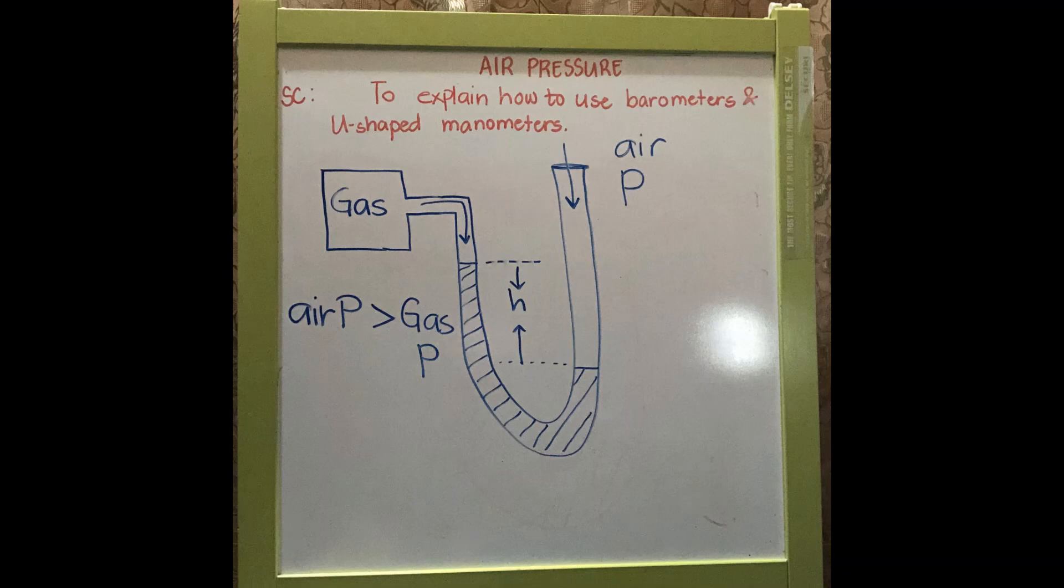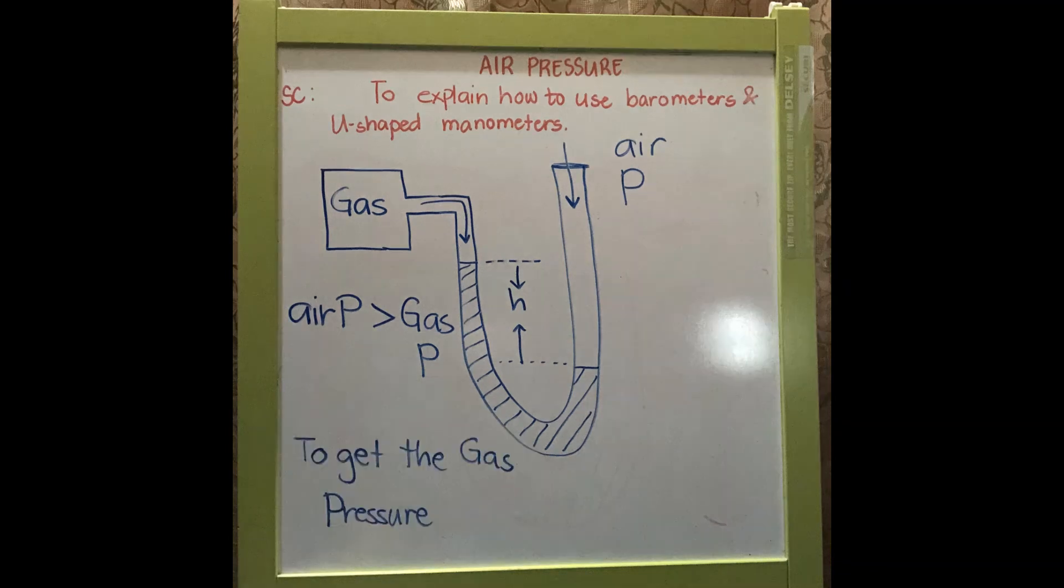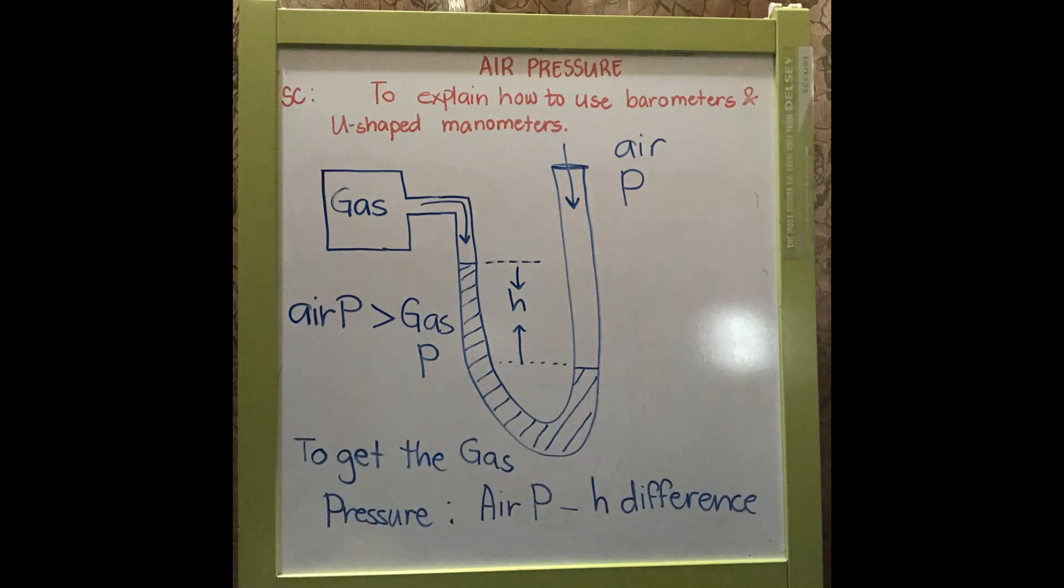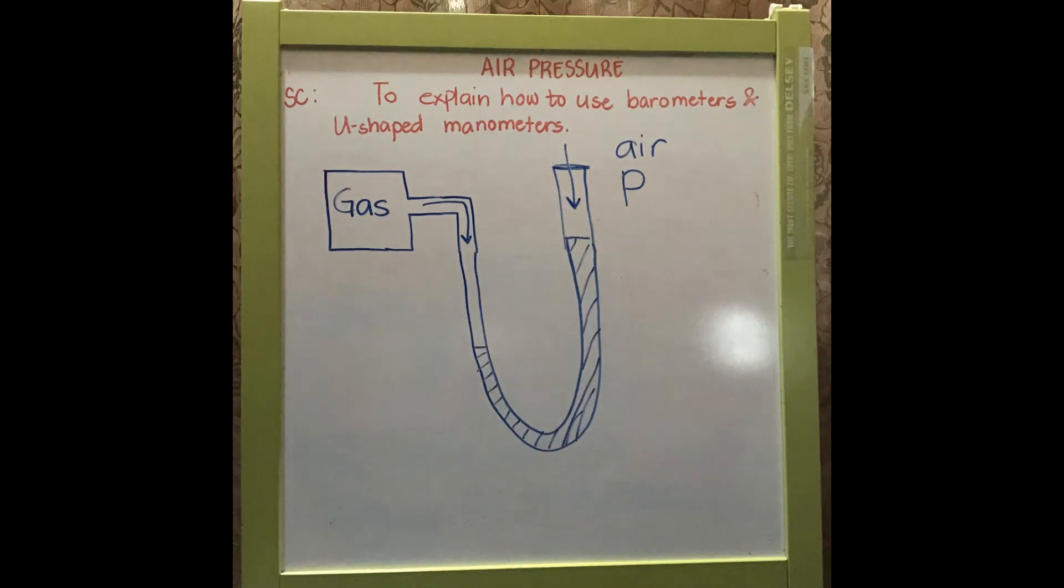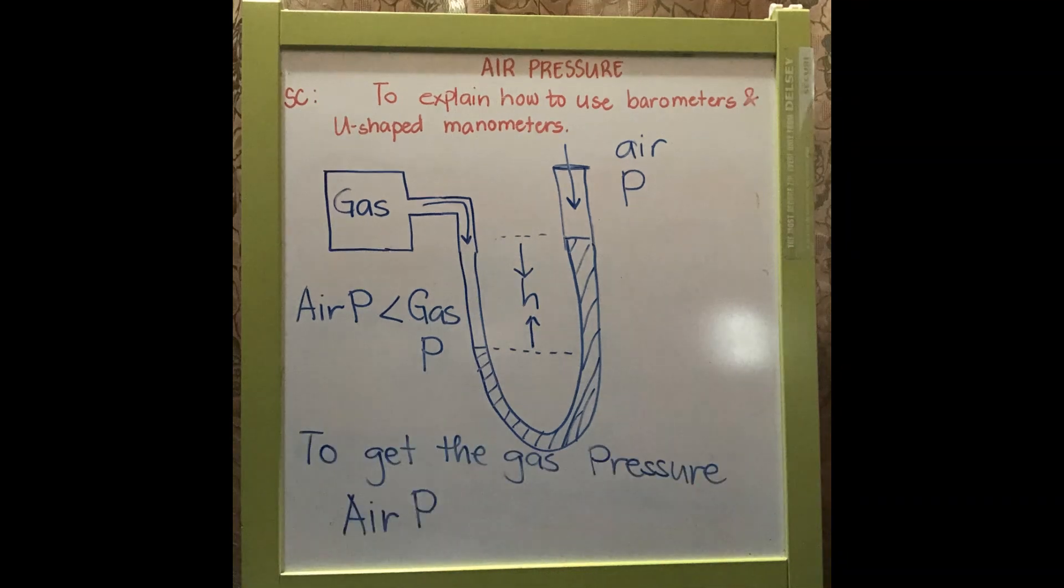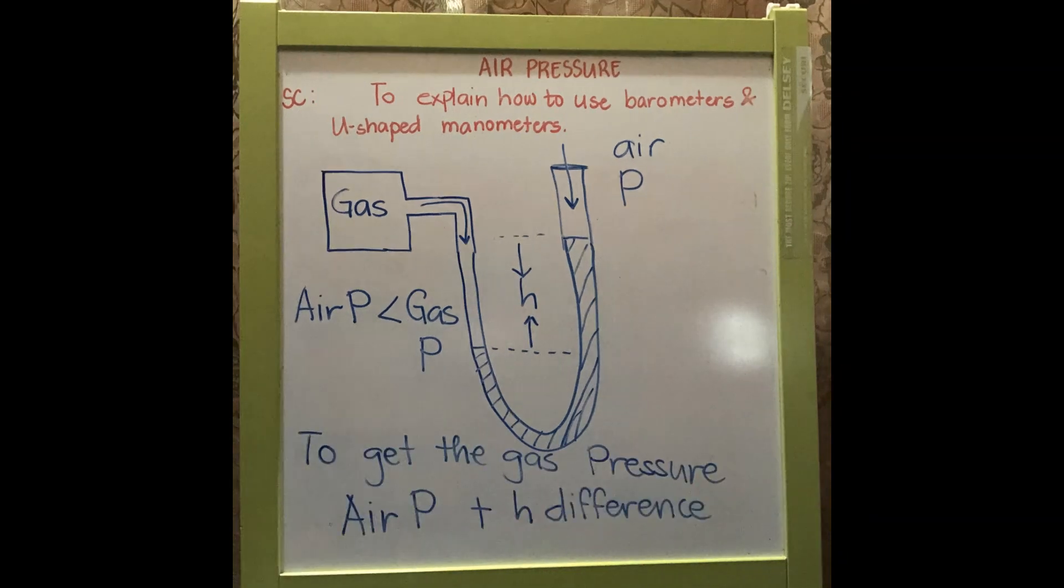So, to solve for the gas pressure, we will use air pressure minus the height difference. It also works the same way if the gas pressure is greater than air pressure. To solve for the gas pressure in this case, we will add the air pressure and the height difference.